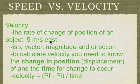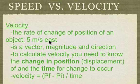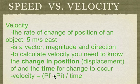Somebody could be going in the opposite direction but have the same speed. So if I'm going 5 meters per second to the east, and somebody else is going 5 meters per second to the west, our speeds are the same but our velocities are not the same. Velocity is a vector — it has magnitude and direction. To calculate velocity, you take your change in position (final minus initial, always) divided by the time it took for that change to occur.